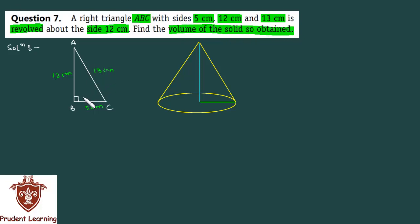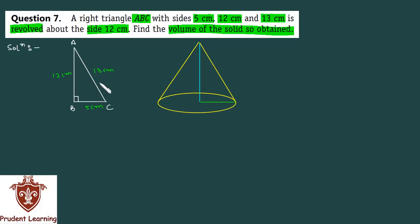The question is not too difficult, but it is a bit tricky. You need to do a good visualization. Draw a right triangle with a 90-degree angle. The sides given are 5 cm, 12 cm, and 13 cm. The triangle is revolved about the 12 cm side.